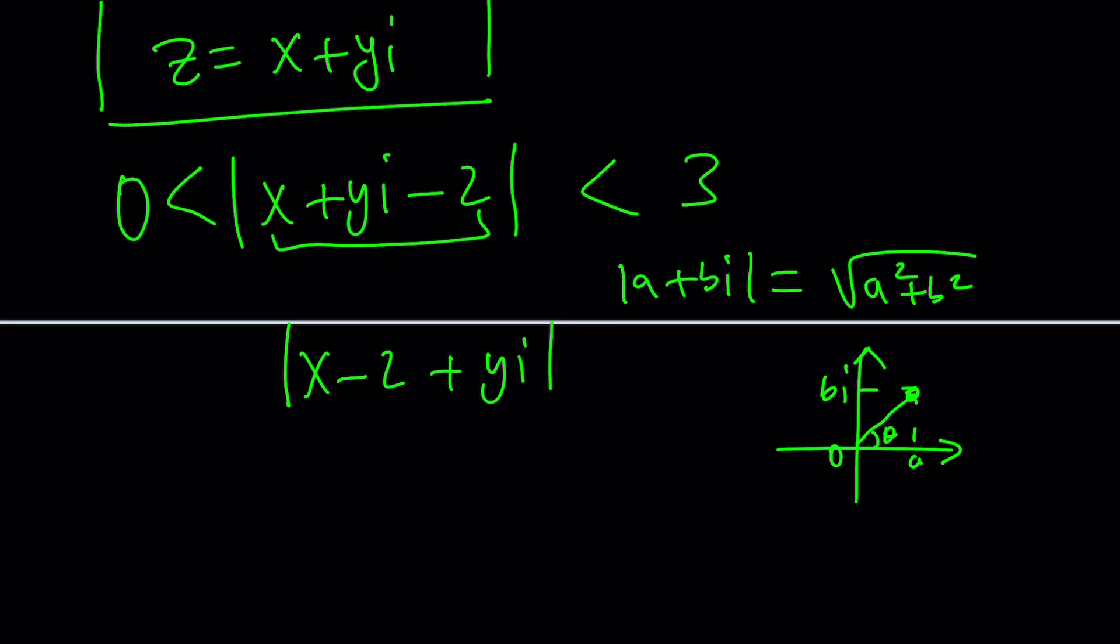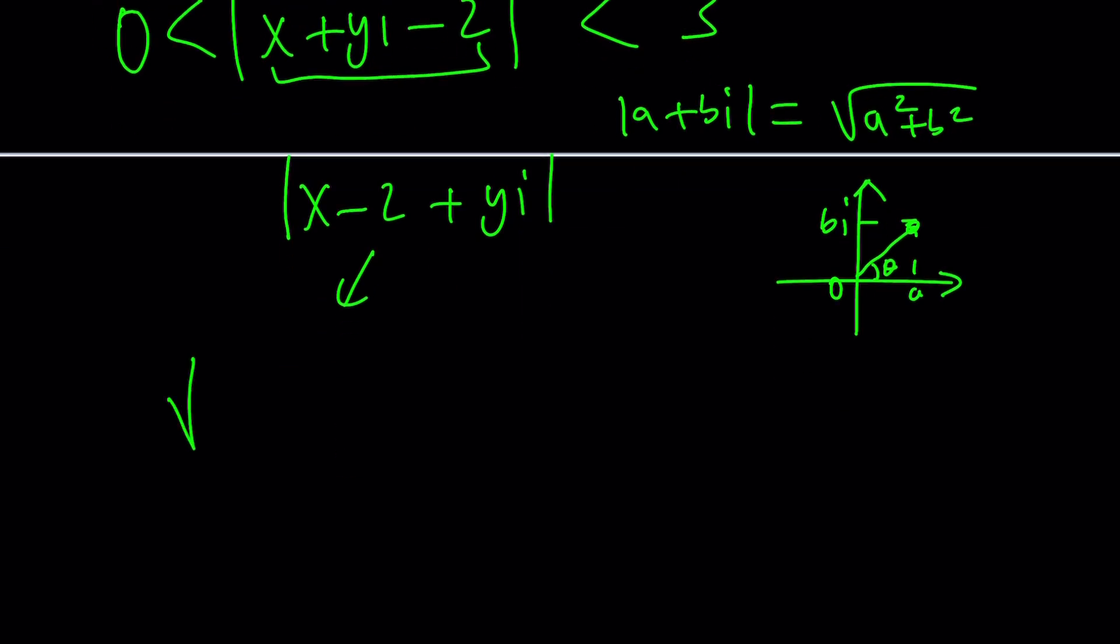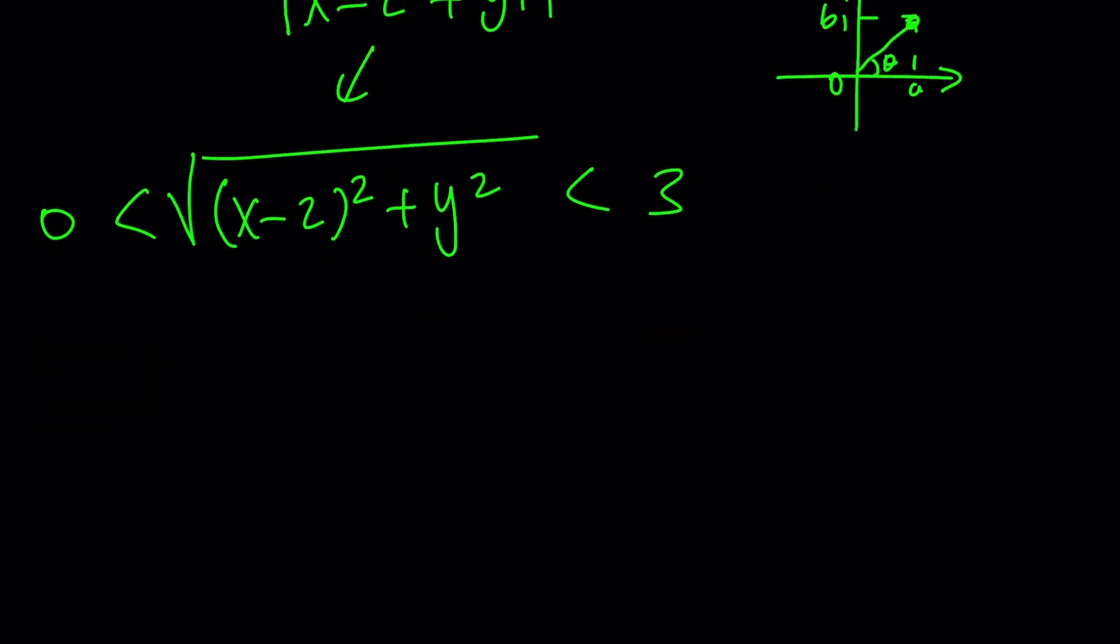So by definition, this becomes the square root of x minus 2 squared plus y squared, and then square root of the whole thing. We want this to be between 0 and 3, so how do you handle that? Again, you can do it separately or just do all at once. Doesn't matter, no big deal. I find this a little bit easier.